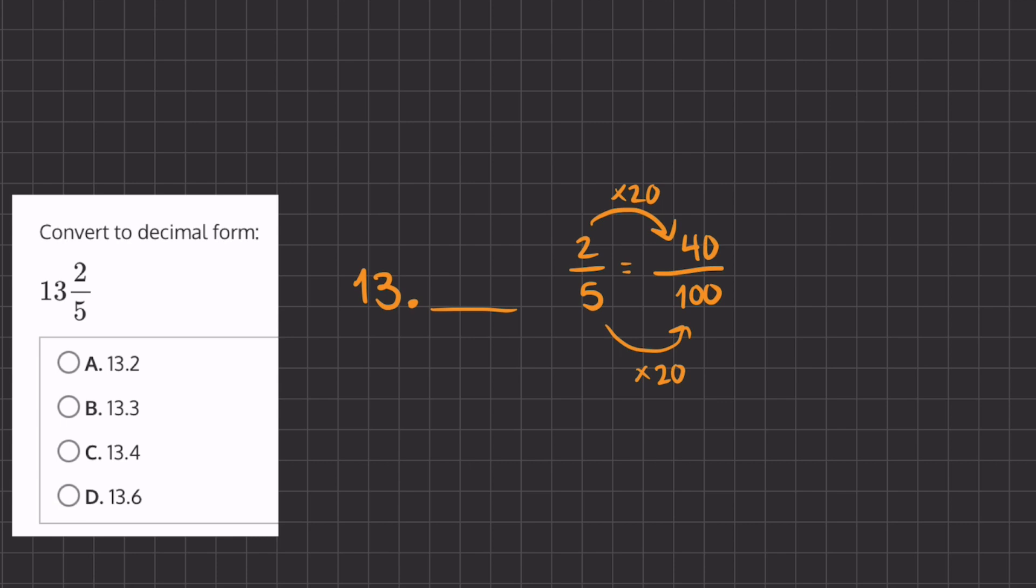Once we have a fraction in this form, we can easily take this 40 and ask ourselves how many zeros we have after the 1—that's 2. We're going to take this 40 with a decimal place that usually we don't write, but it does exist, and we'll move our decimal two times.